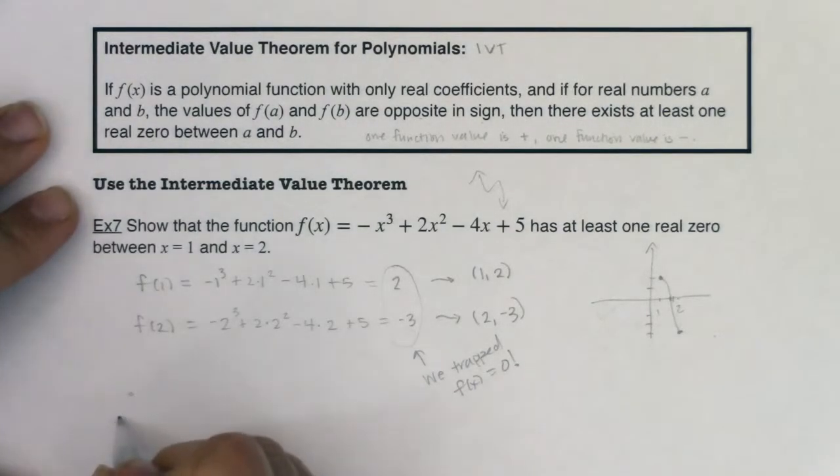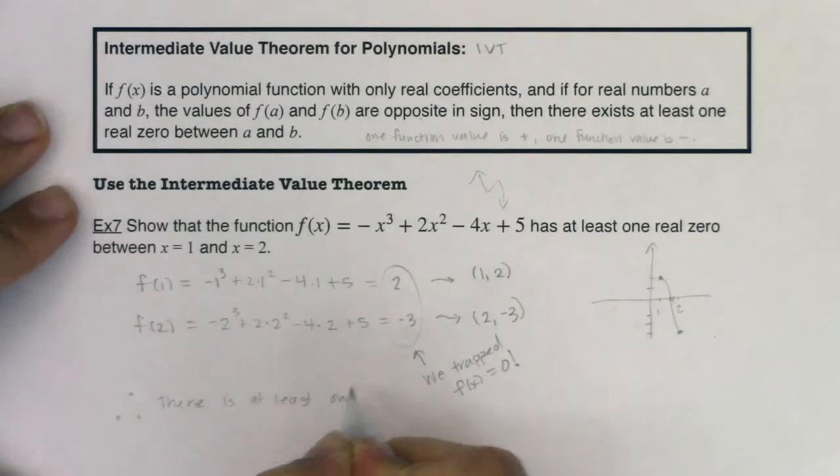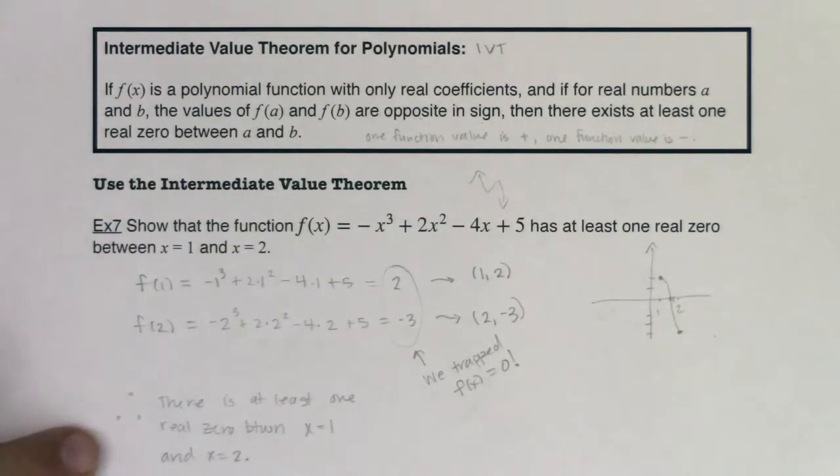So I must have had an x-intercept. And that's how you can apply the intermediate value theorem. So I can say, therefore, there's at least one zero. There might even be more, but there is at least one zero, one real zero specifically, between x equaling 1 and x equaling 2. That's what the intermediate value theorem is telling us.